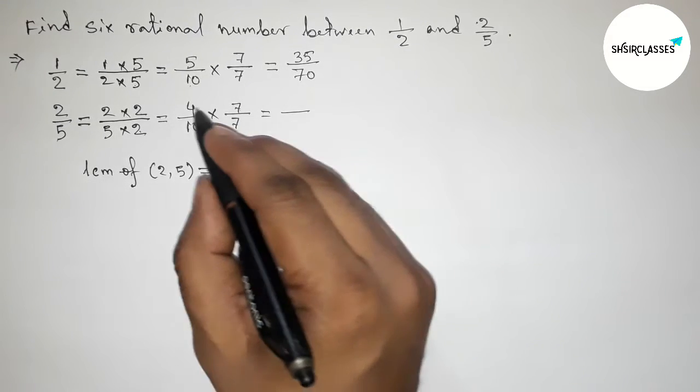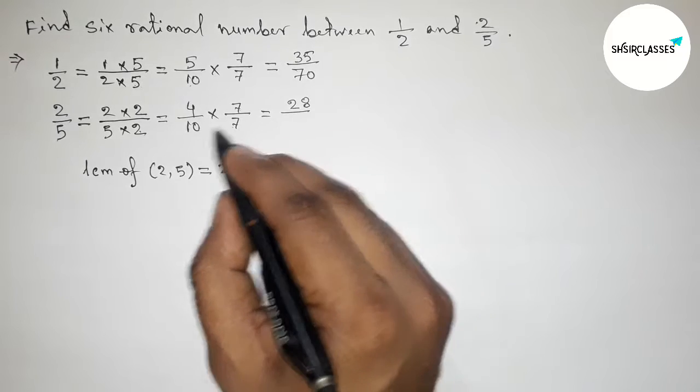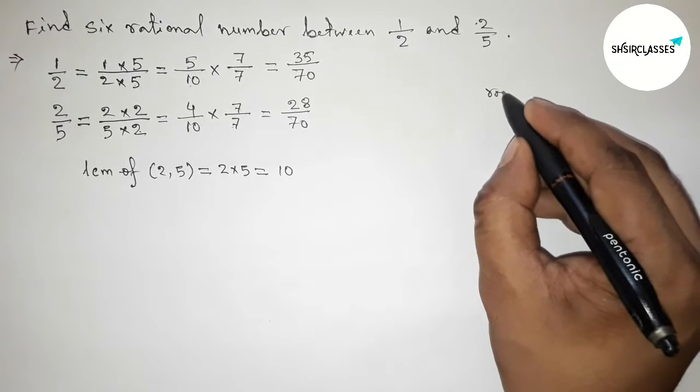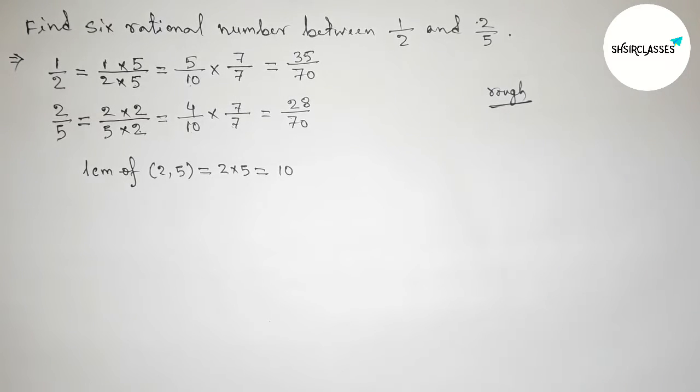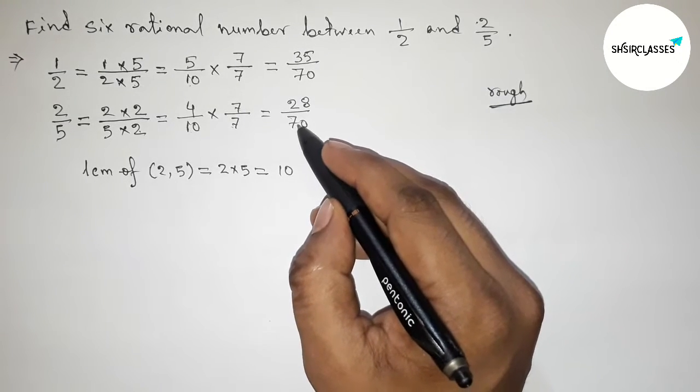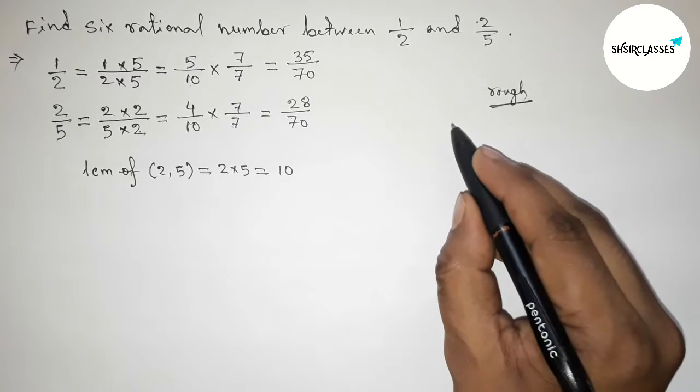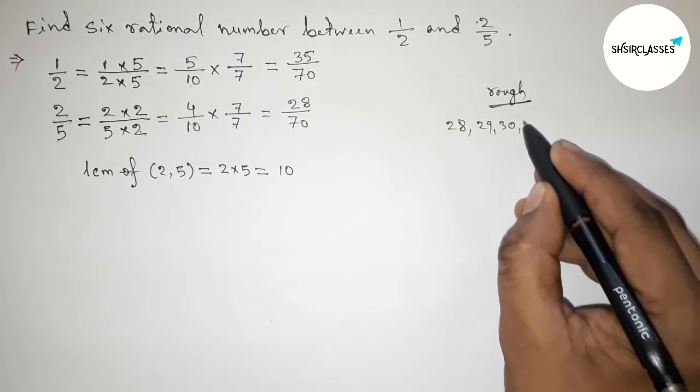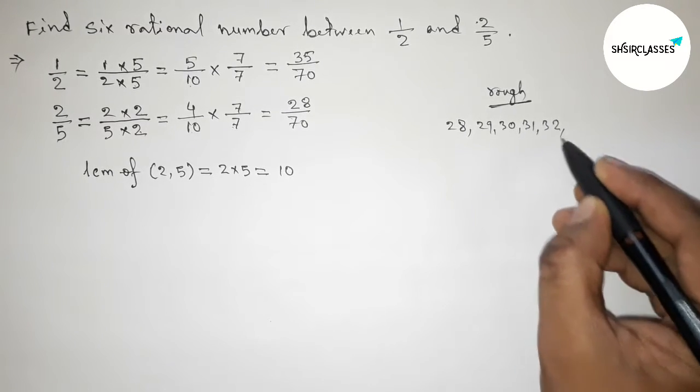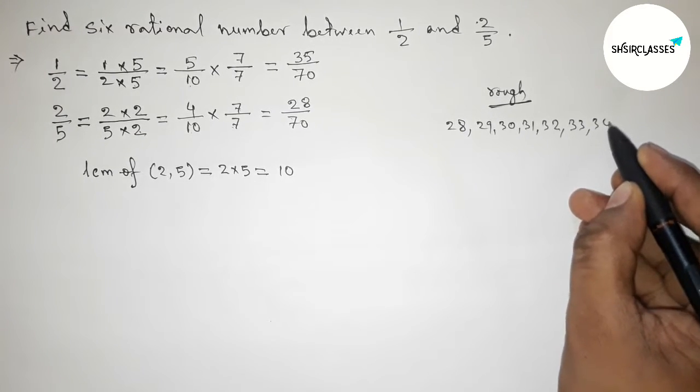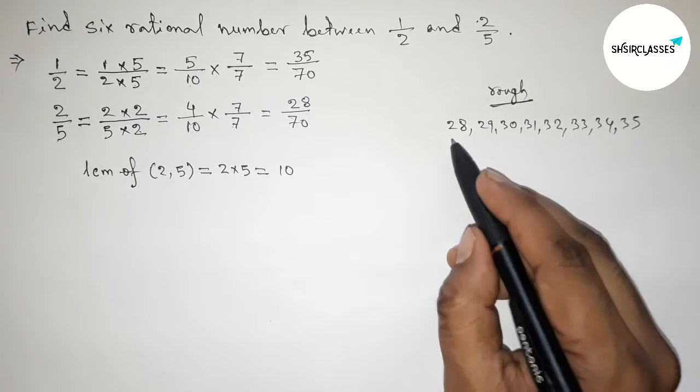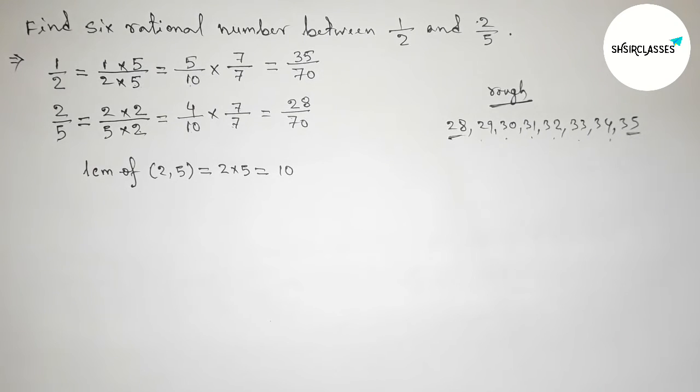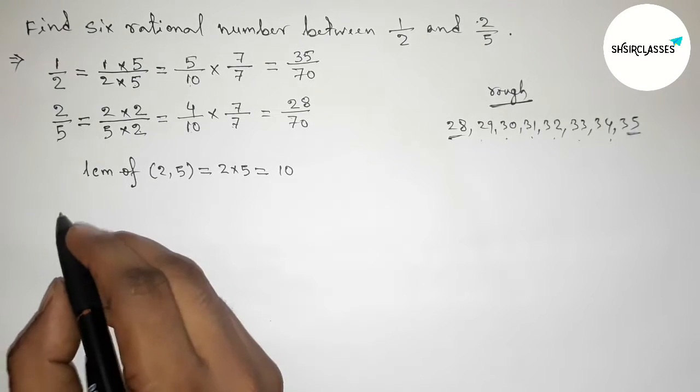So now roughly discussing here some important calculations. Both the denominators are 70 and equal. Now between 28 to 35 we can get here 6 integers. By these 6 integers we can form 6 rational numbers. Now first write down all the rational numbers.